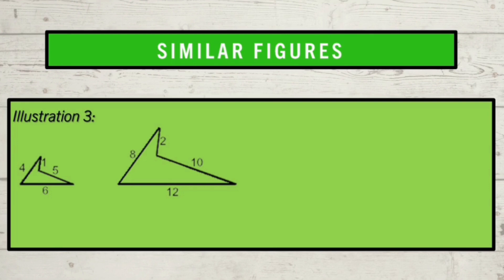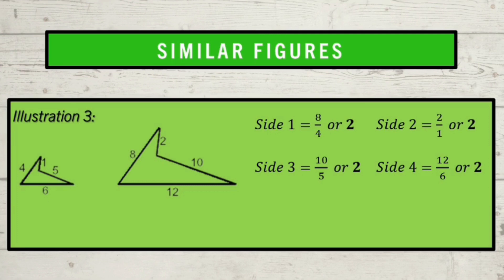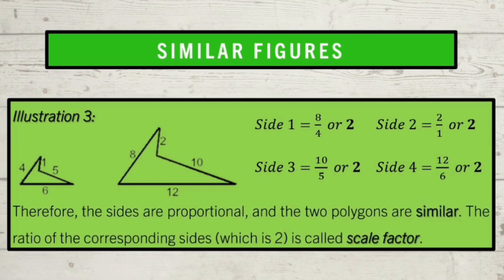Let us try to solve this one. Given the figures and the lengths of their sides, are the polygons similar? For side 1, we have 8 corresponds to 4, which is 2. For side 2, we have 2 corresponds to 1, which is also 2. For side 3, 10 corresponds to 5, which is 2. For side 4, 12 corresponds to 6, which is 2. Therefore, the sides are proportional and the two polygons are similar. The ratio of the corresponding sides, which is 2, is called the scale factor.